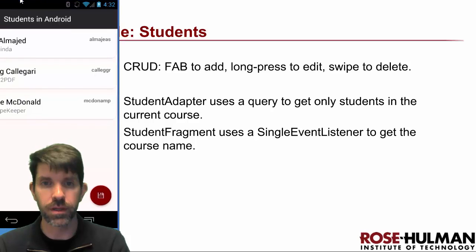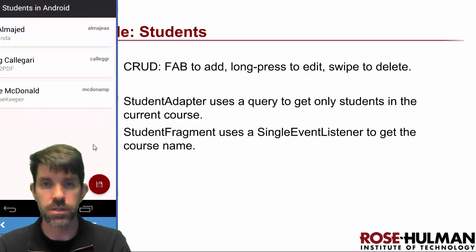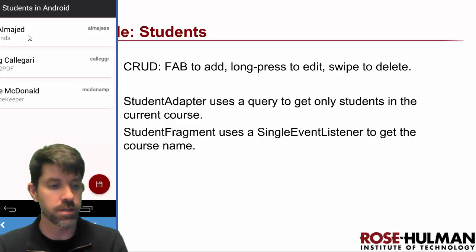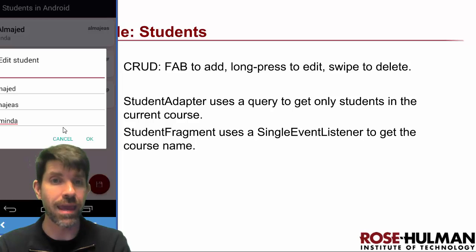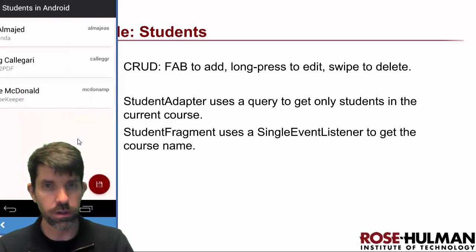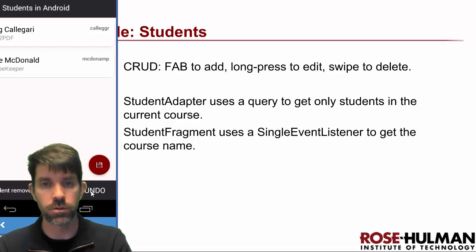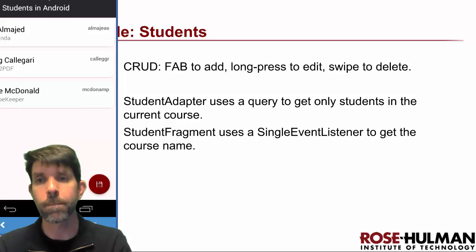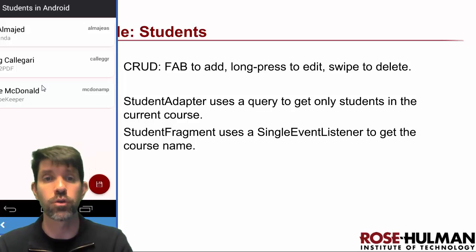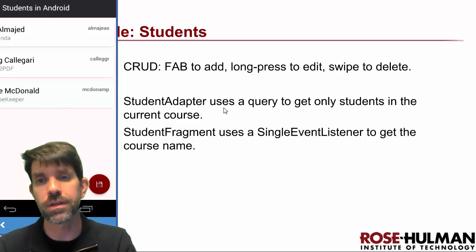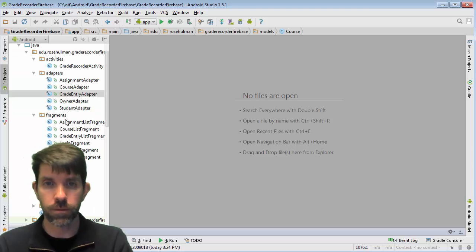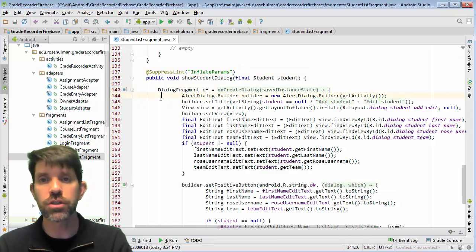So basically, I have a floating action button to add. Doing a long press on one of these guys — the long press is actually to edit — and you'll see that I can edit the information here. I've also done swipe, and this is the only one that has swipe in it. If we do a swipe, that'll delete it, but I can undo it of course. Each course has a whole bunch of students associated with it, so I want to look at a query to only get students in the current course.